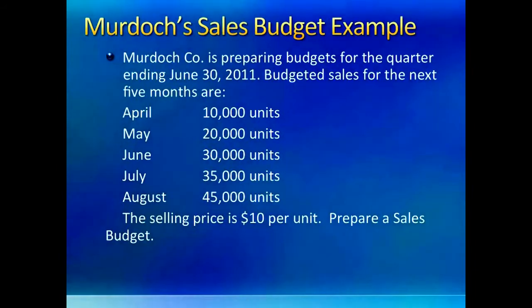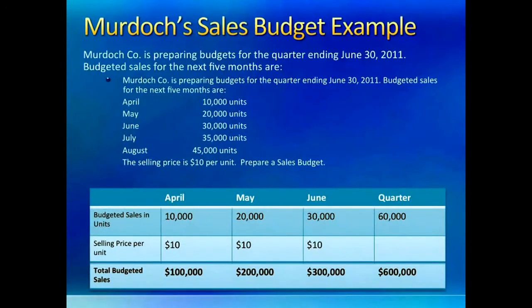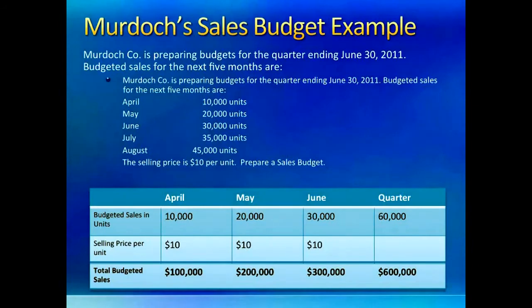Here the question from the previous slide is repeated for reference when solving the sales budget. A quarter has 3 months total: April, May, and June. Sales in units times price per unit and you are done. You can copy these numbers or print out the slide for future reference, since we will be using these numbers again.